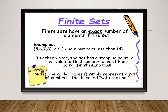Finite sets have a last value or a final number. The elements in a finite set do not go on forever — finite sets finish, the elements stop. The curly bracket notation represents a set of numbers, people, foods, or toys. This is called set notation.